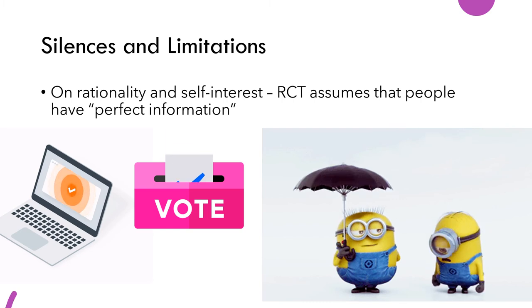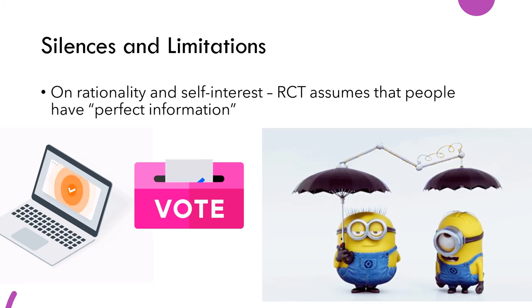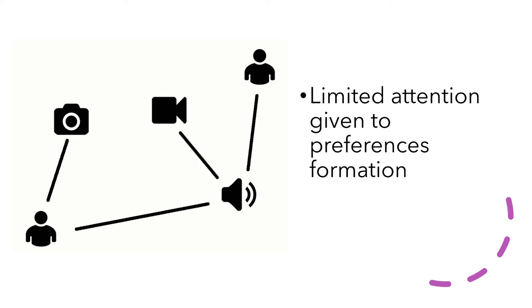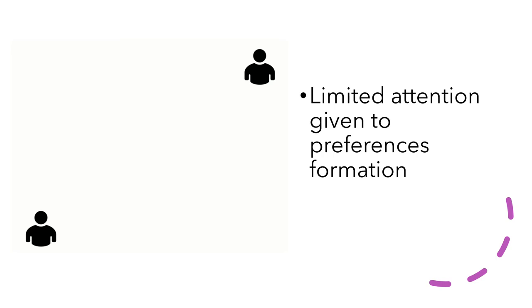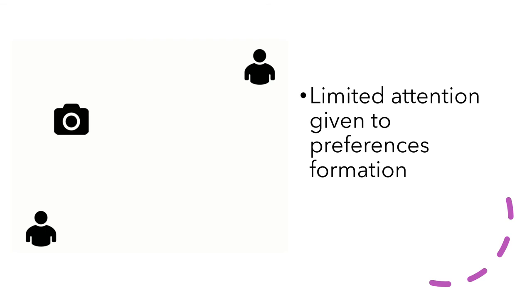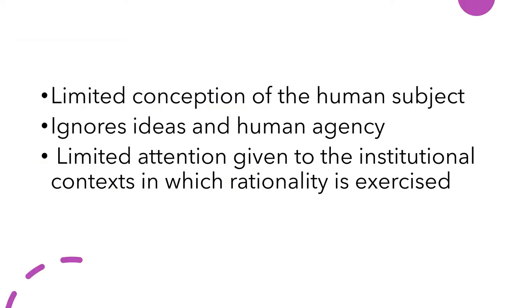There could also be other motivations for politicians to be elected into office — it's not always money. Another limitation is that rational choice theory does not actually explain the origin of people's self-interest. Where does interest come from? It pays insufficient attention to social and historical factors, failing to recognize that human self-interestedness may be socially conditioned and not merely innate. Rational choice theory says people are just naturally rational, but this critique says we need to look at context. Other critiques include a limited conception of the human subject, ignoring ideas and human agency, and limited attention to the institutional context in which rationality is exercised.